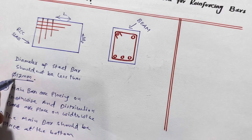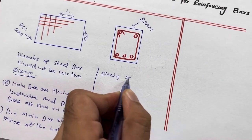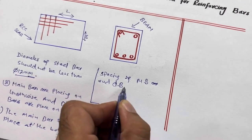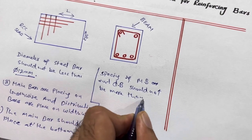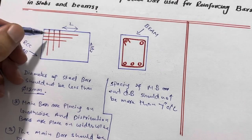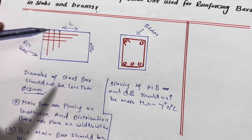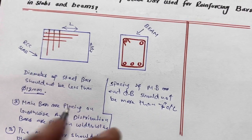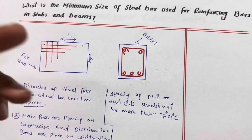The spacing of main bars and distribution bars should not be more than seven inches center to center. If we increase the spacing, it cannot support the structural load applied on top of the RCC slab. Seven inches is acceptable — don't go beyond this, otherwise you will face problems. We also have negative and positive bending moments, and to resist them we provide extra steel rods such as bent-up bars.